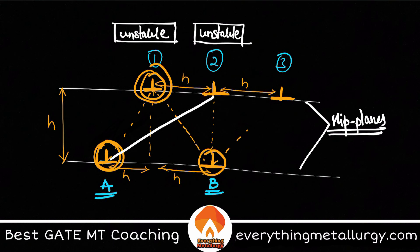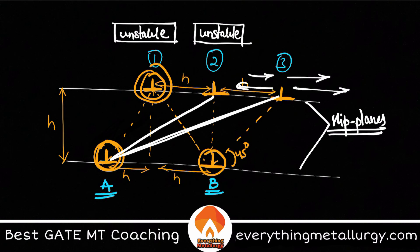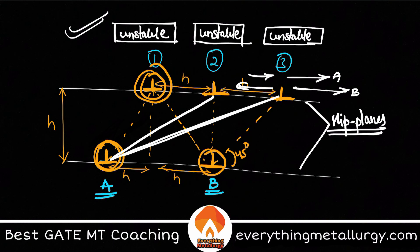Position three is again at 45 degrees, making it unstable. Additionally, there are forces from both dislocations A and B acting on it. Both contributions make this an unstable position — even if the force were momentarily zero, the dislocation would not remain there due to these interactions.